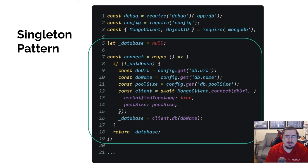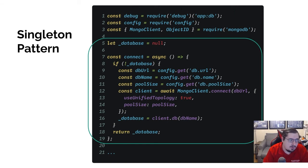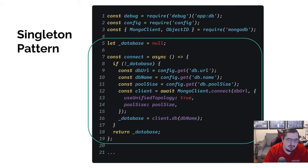Otherwise, from there on out, assuming the connection is now open, we'll just return the database directly. So the first time through, it goes through all the connection logic, but any time from there on out, it just says return database. Anytime you need to connect to the database, make sure you use connect — don't use the _database variable directly because it may or may not still be null. That bundles the logic together, ensures we're not creating multiple pools and multiple clients.